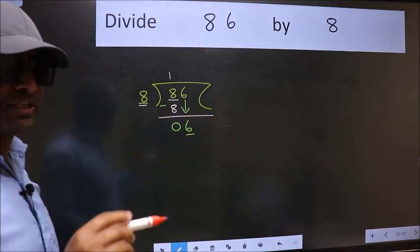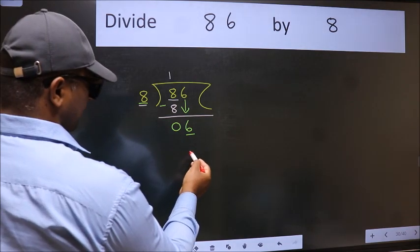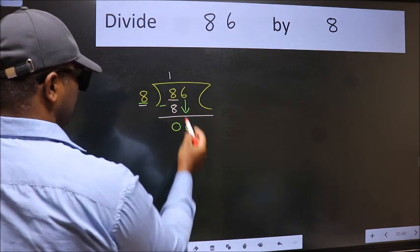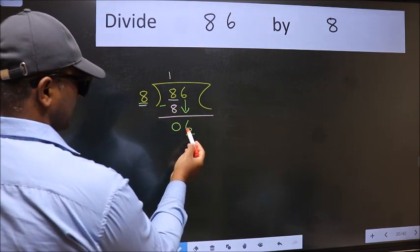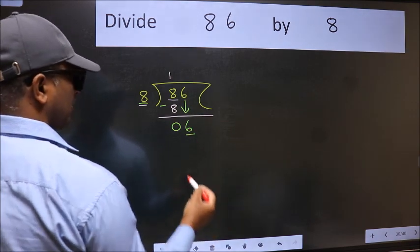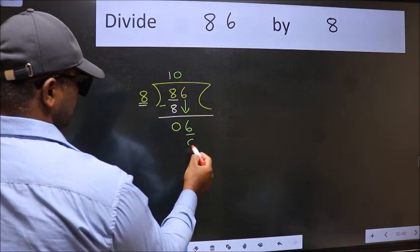Instead of that, what we should think of doing is, which number should we take here? If I take 1, we will get 8. But 8 is larger than 6. So what we do is, we take 0. So 8 into 0, 0.